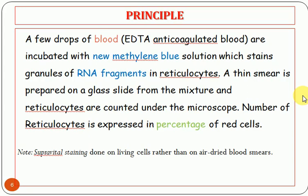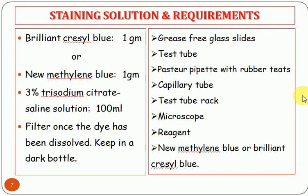Staining solution preparation: take 1 gram of brilliant cresyl blue or new methylene blue, and dissolve in 100 ml of 3% trisodium citrate saline solution. To prepare 3% trisodium citrate, dissolve 3 grams of trisodium citrate in 100 ml of normal saline. After mixing, filter the solution and store in a dark bottle.